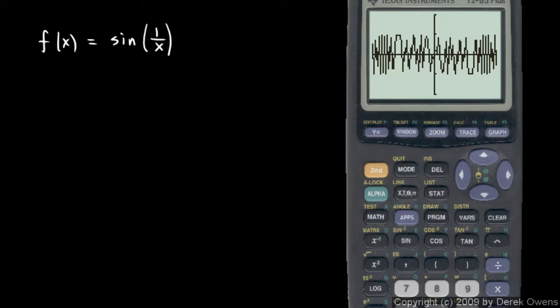If you think about the function, that should make sense. The function f(x) is sine of 1 over x, so imagine the sine function. The sine oscillates indefinitely.